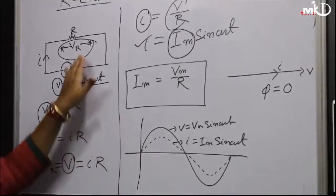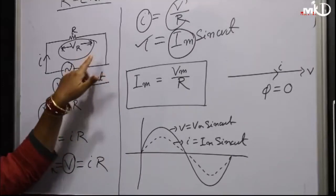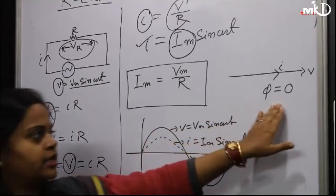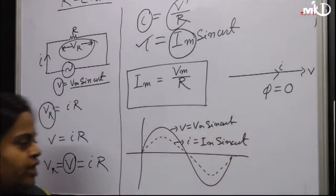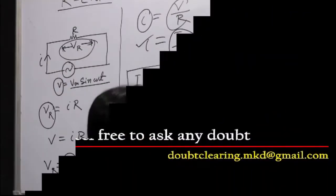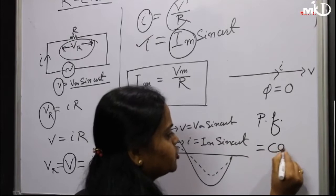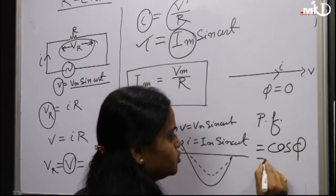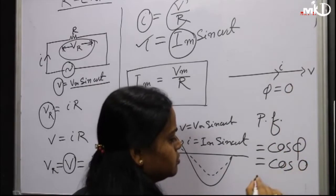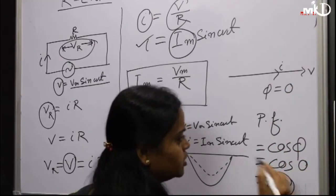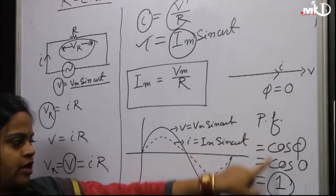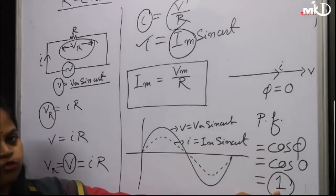This is the concept of a purely resistive circuit: voltage and current are in phase, and the phase angle is 0. We have one term called power factor, which is cos(φ). So cos(0) = 1. In the case of a purely resistive circuit, the value of power factor is unity, or 1.